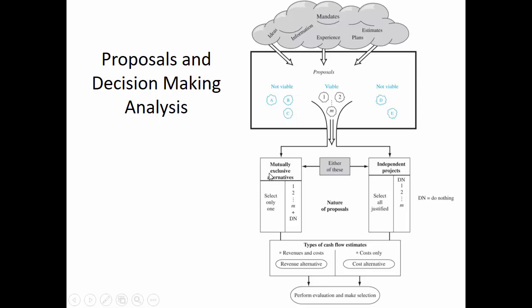Among viable proposals, you can sort them into two categories: those that are mutually exclusive, meaning only one is selected among all alternatives — for instance, a water heater where if you're buying from American Standard, you're not also buying one made by Rheem. An independent project, on the other hand, is one that can be selected while other projects are done as well — such as upgrading servers, reconfiguring the loading dock, or modifying the phone systems. Those are examples of independent projects where there isn't anything mutually exclusive about them.